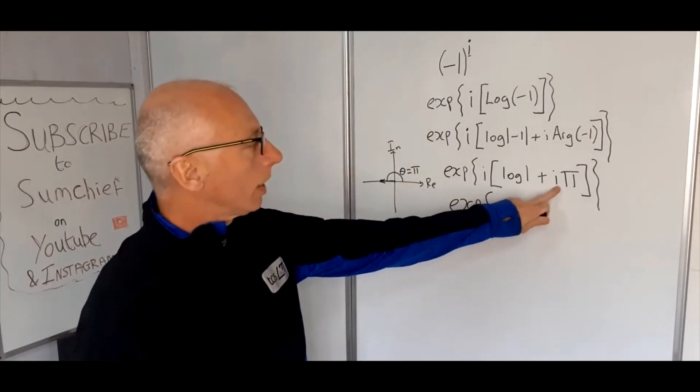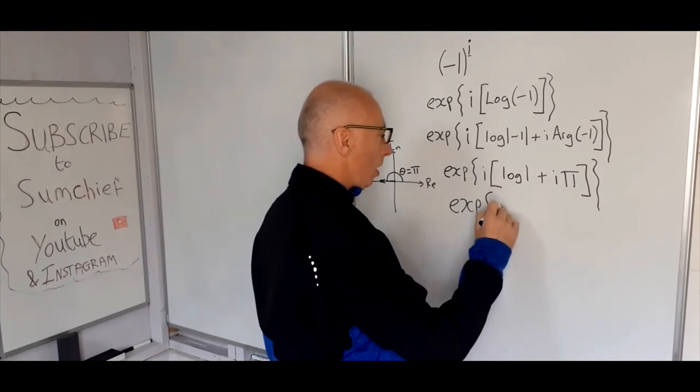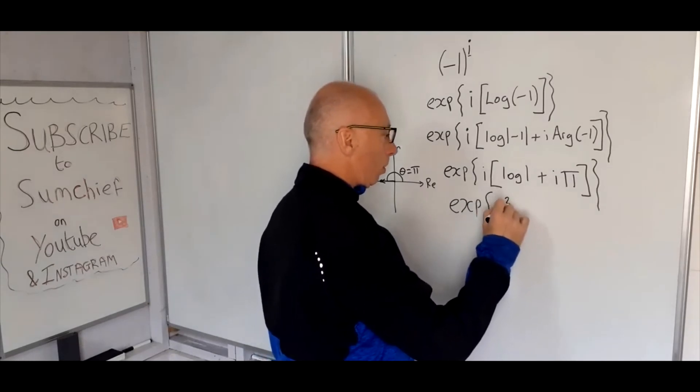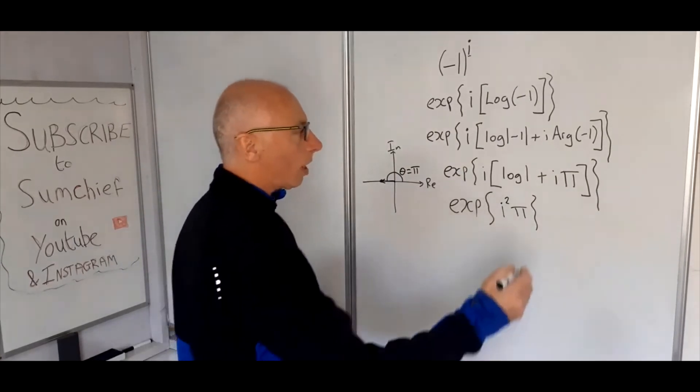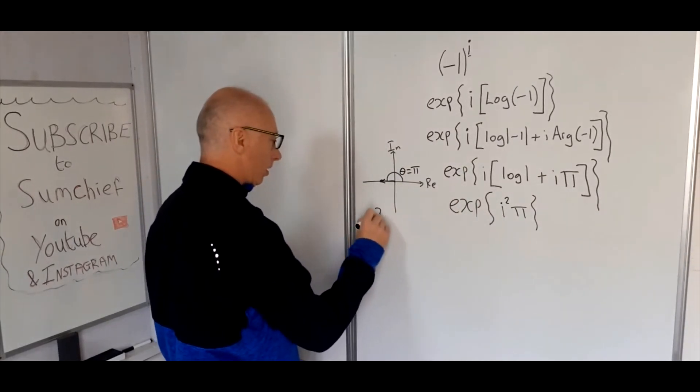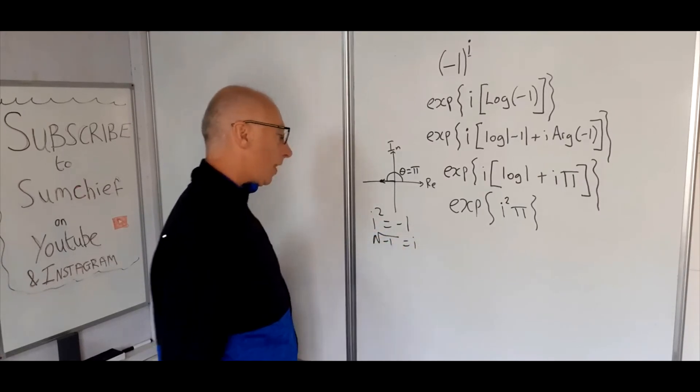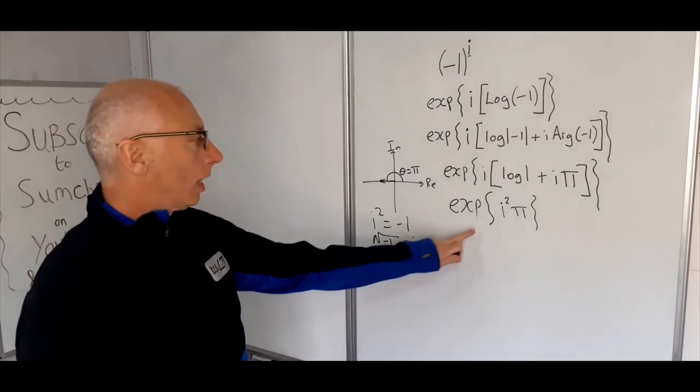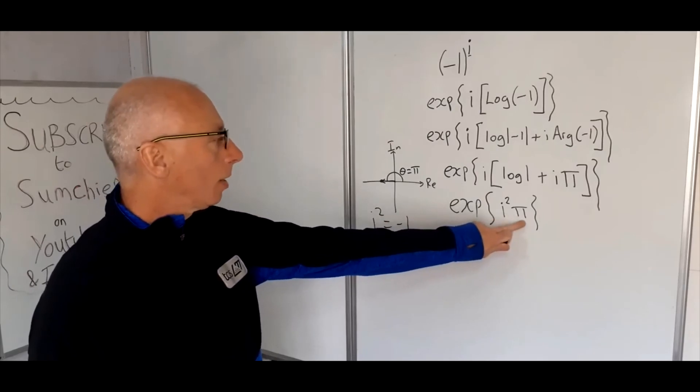Then i times i times pi, distributing this to this one here. So we end with pi, squared pi. Well, i squared, we know that i squared equals minus one because the square root of minus one equals i. Okay, so we've got i minus one in here for i squared and the pi.